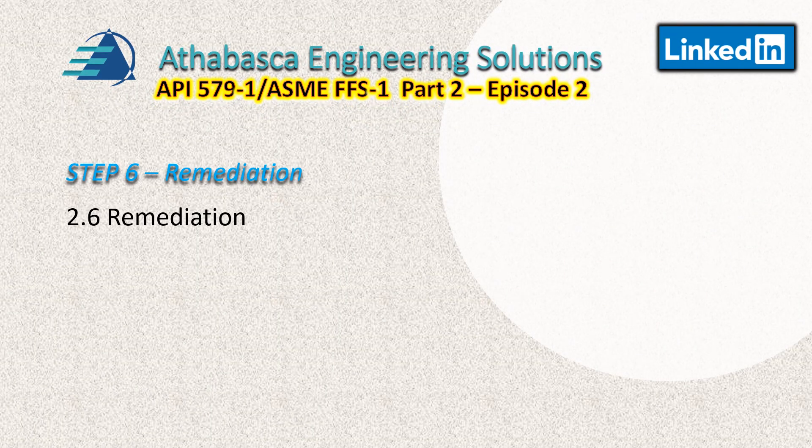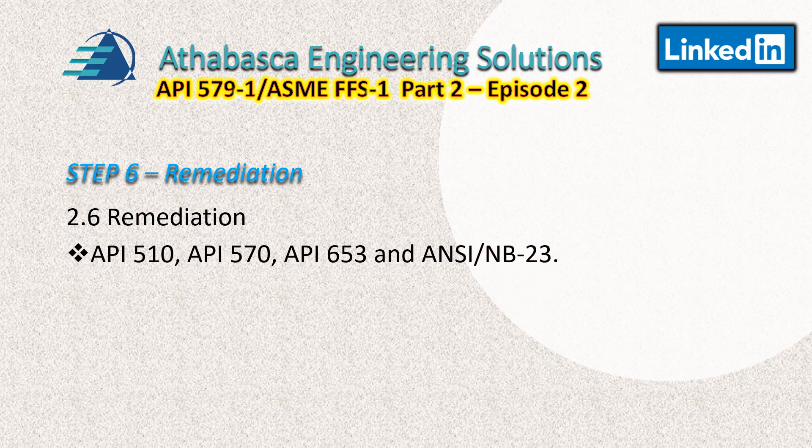Step six is remediation, covered in section 2.6, which doesn't have a lot of detail on its own. It mainly points to particular parts of the standard for specific information and to specific API specifications — the one I'm most familiar with is API 653 for tank damage repairs. You have to review the particular flaw mechanism and the specific specification for guidance.